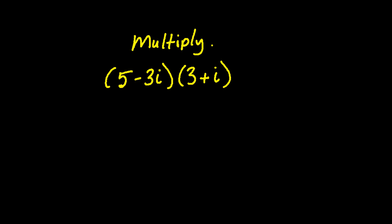For this problem they want us to multiply 5 minus 3i times 3 plus i. When we see i's in problems like these, we should recognize that they are having us multiply the imaginary number i. Keep in mind that i is defined to be the square root of negative 1. i squared would then be the square root of negative 1 squared, which is negative 1.